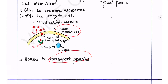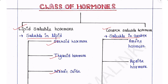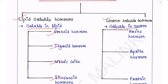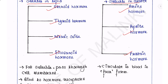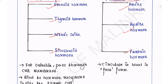Water-soluble hormones include amine hormones, peptide hormones, and protein hormones. Water-soluble hormones circulate in the blood plasma in a free form — they are not bound with transport proteins.